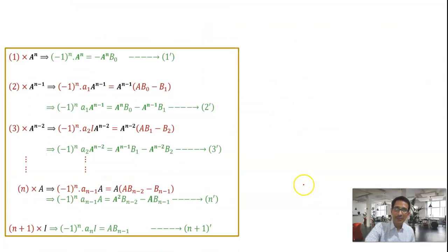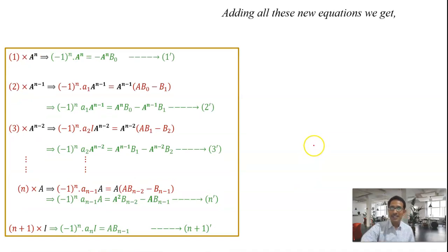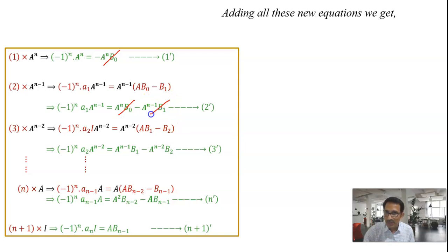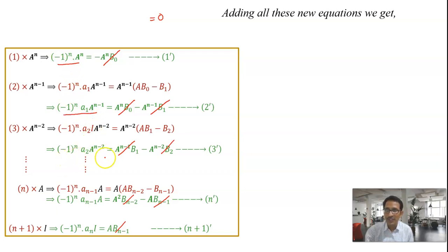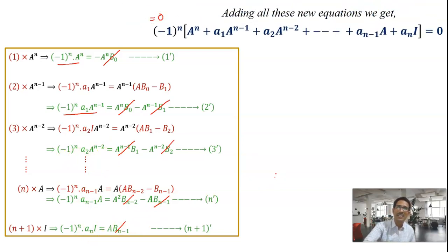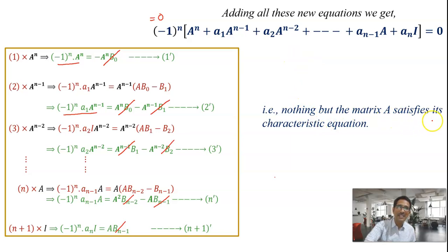Adding all these n plus 1 equations together, on the right-hand side all terms cancel in pairs: minus A^n·B0 cancels with plus A^n·B0, minus A^{n-1}·B1 cancels with plus A^{n-1}·B1, and so on, until A·B_{n-1} also cancels. The entire right-hand side becomes 0. The left-hand side is exactly the characteristic polynomial with A substituted in place of lambda — which means the matrix A satisfies its own characteristic equation. This completes the proof of the Cayley-Hamilton theorem.